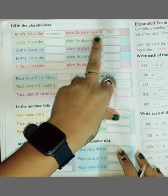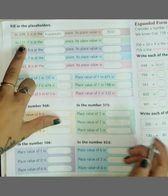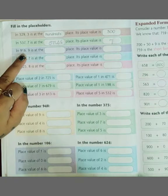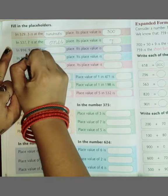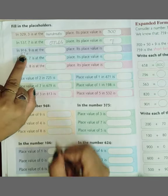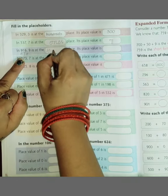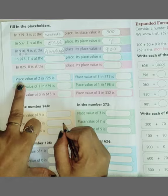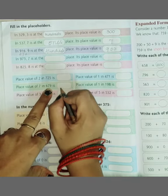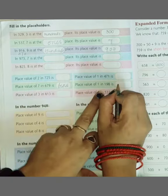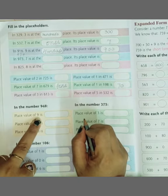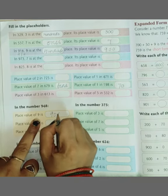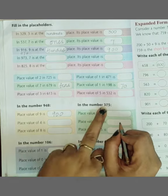In 537, 7 will be at ones place and its value will be 7. Here 916, so what will happen? Ones, tens, hundreds. So 9 is at hundreds place and this will be 900. Similarly you all have to do this. Place value of 7 in 679 will be tens and the place value will be 70. Place value of 9 in the number 948, place value of 9 is 900, place value of 7 is 70.